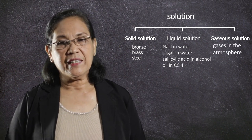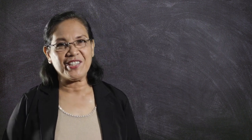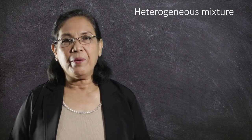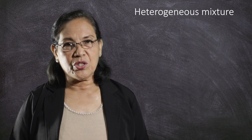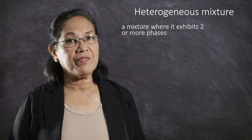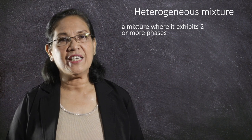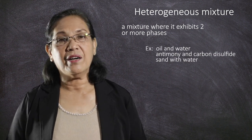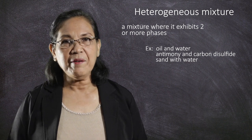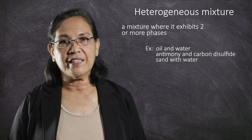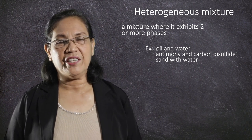Another kind of solution is the gaseous solution. A good example for this is the mixture of gases in the atmosphere. Let's go to the other kind of mixture, the heterogeneous mixture. When we say a heterogeneous mixture, this is a kind of mixture wherein it presents two or more phases and the components of the mixture can be distinguished. Examples of a heterogeneous mixture are oil mixed with water, table salt added with oil, antimony dissolved in carbon disulfide, or sand added with water.